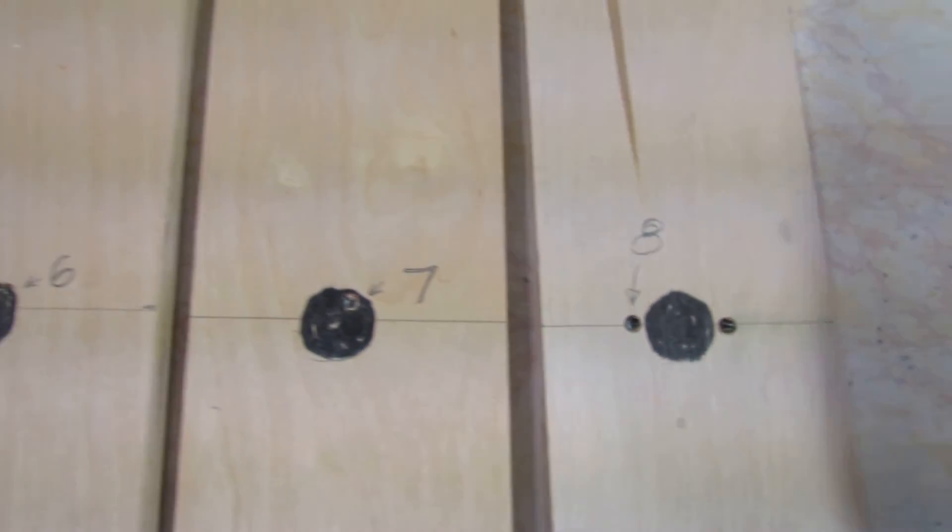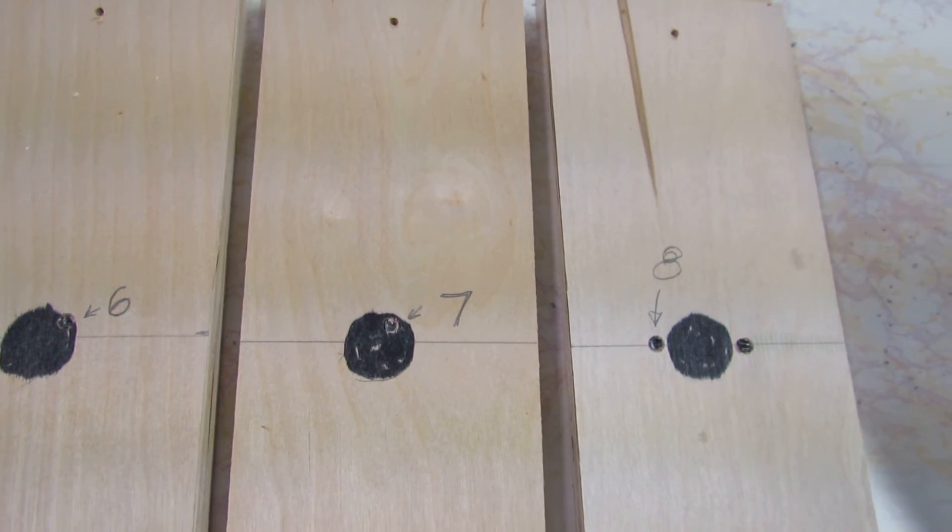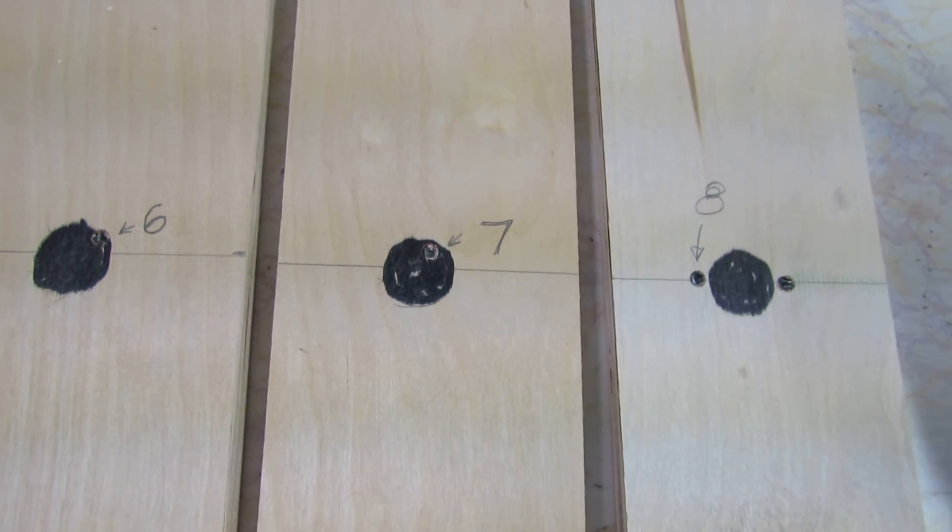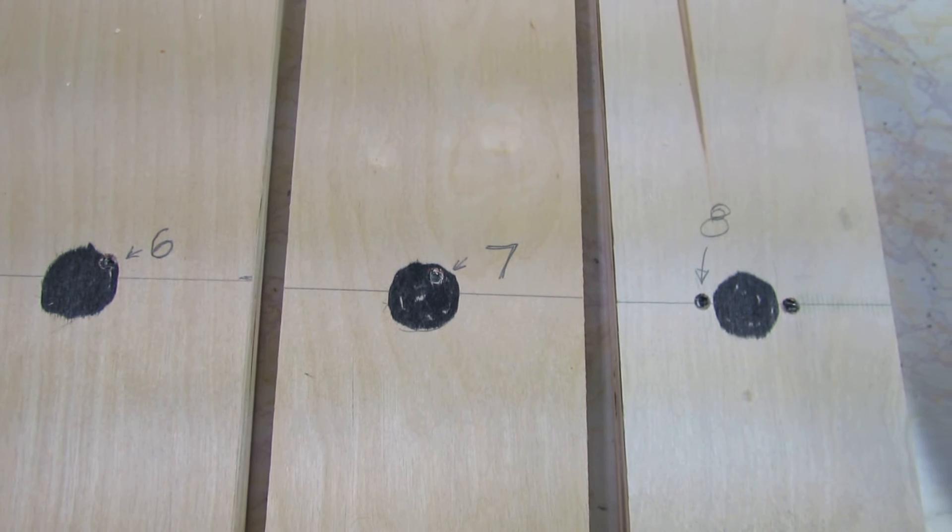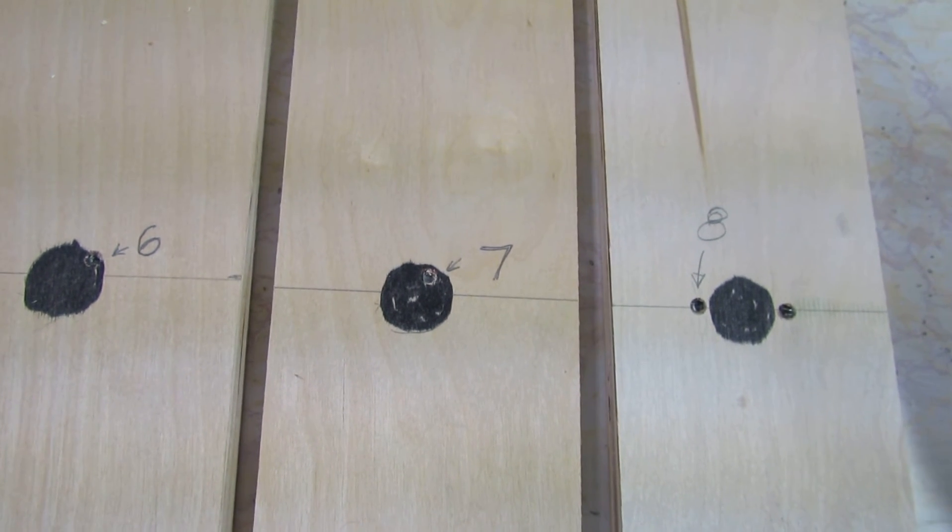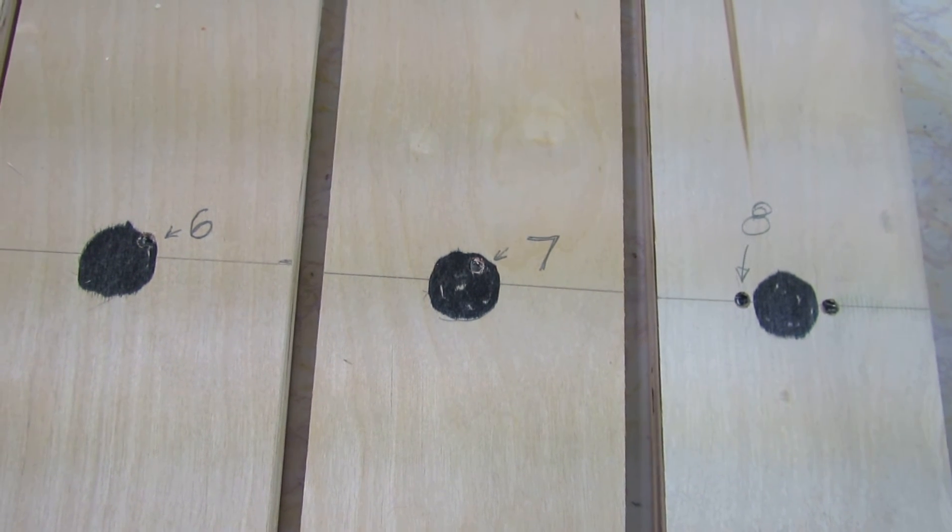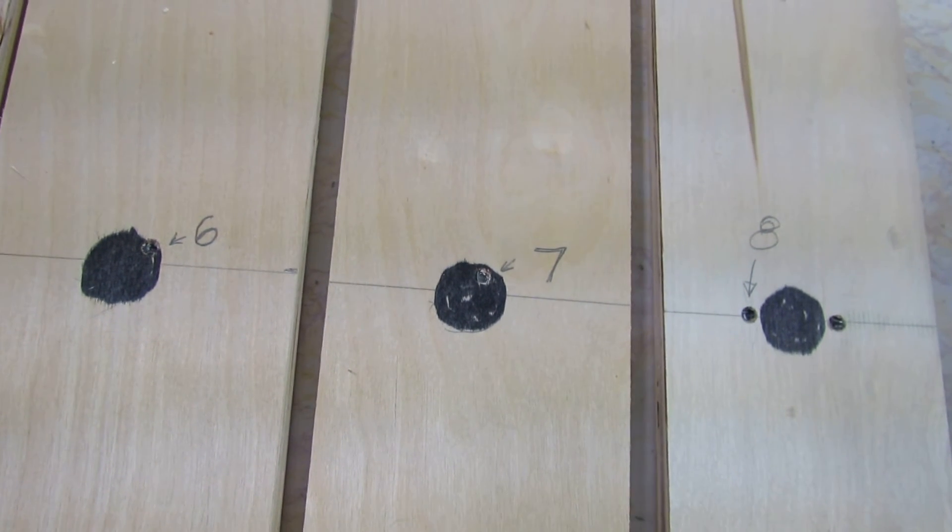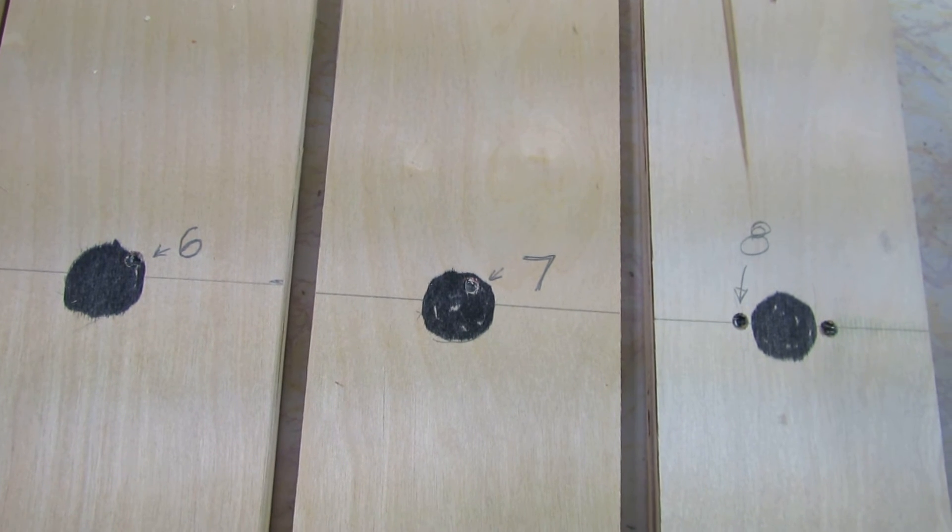My rifle is sighted in at 10 or 11 yards, which is the distance of my basement range where I do most of my plinking. The test shows that once I get to six pumps, the sight is also on target at 25 yards. Now let's take a look at the impact results.